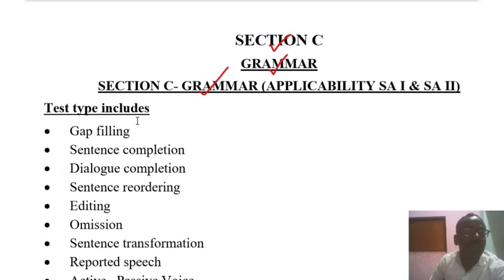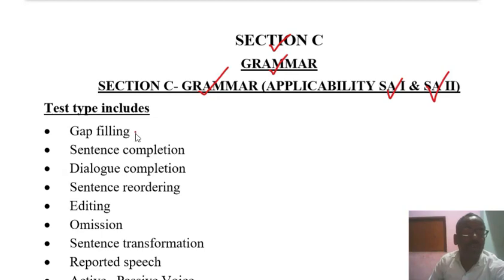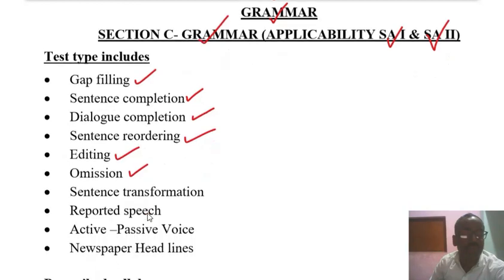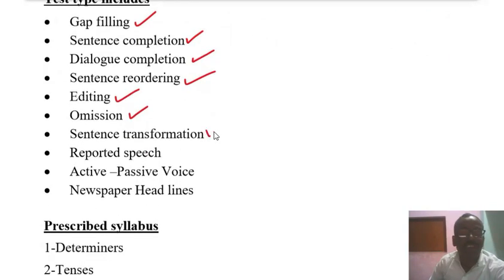Class 10. The test types include Summative Assessment 1 and Summative Assessment 2, which include Gap Filling, Sentence Completion, Dialogue Completion, Sentence Reordering, Editing, Omission, Sentence Transformation, Reported Speech, Active and Passive Voice, and Newspaper Headlines.